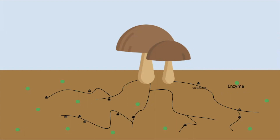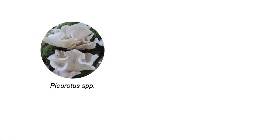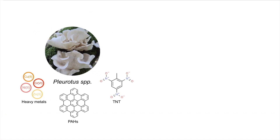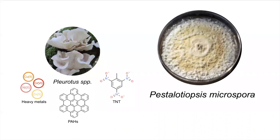A variety of mushrooms can be utilized for mycoremediation, depending on what types of enzymes they have. In the case of the California wildfires, oyster mushrooms were used. They belong to the genus Pleurotus, which has been shown to break down many compounds, including heavy metals, polycyclic aromatic hydrocarbons (PAHs), and TNT. Another example is Pestalotiopsis microspora, which breaks down polyester polyurethane, used frequently in industry and construction.